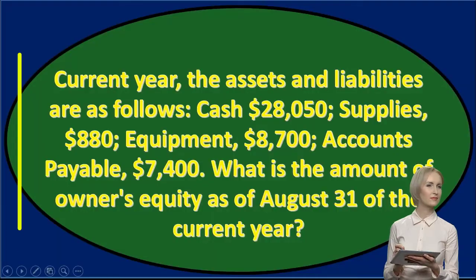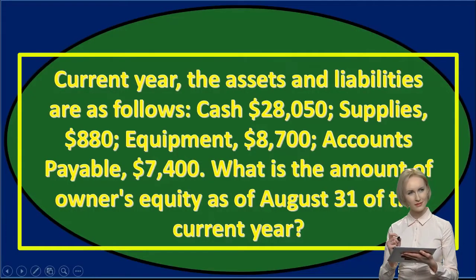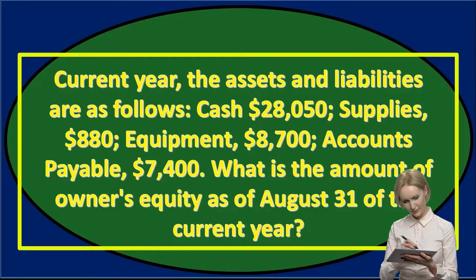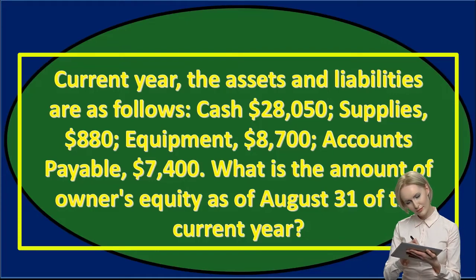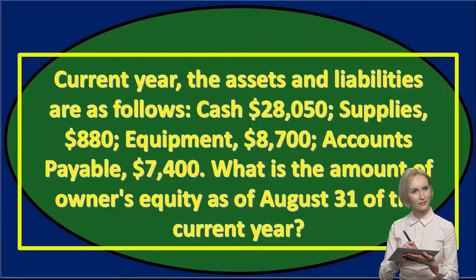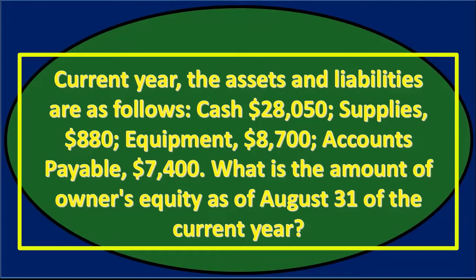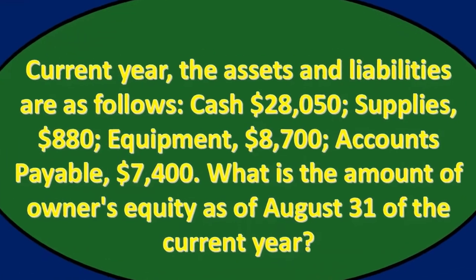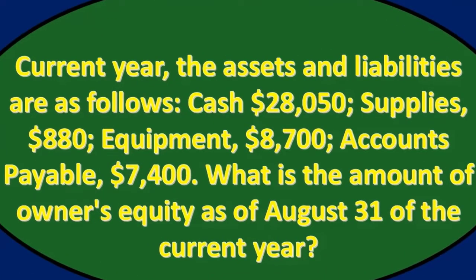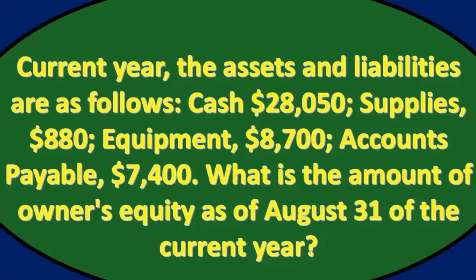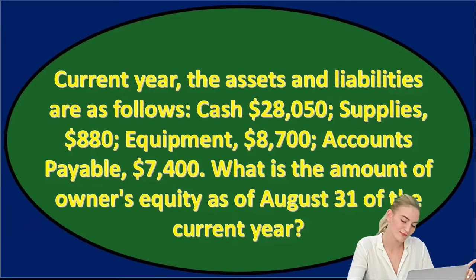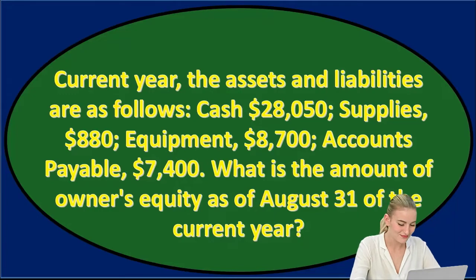Our next problem is similar in nature. For the current year, assets and liabilities are as follows: cash $28,050, supplies $880, equipment $8,700, and accounts payable $7,400. What is the amount of owner's equity as of August 31st of the current year?